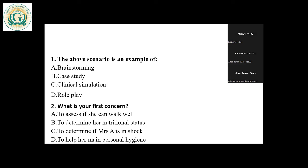Students respond: C, C, A. Alright, so the one who selected A — do you want to justify your answer? Yes. The first concern was the relative assisting her to walk, so I think the person was asking about the first concern. If she can walk well, because when they come with their relative holding them, we try to assess if they can walk well before we can help them.